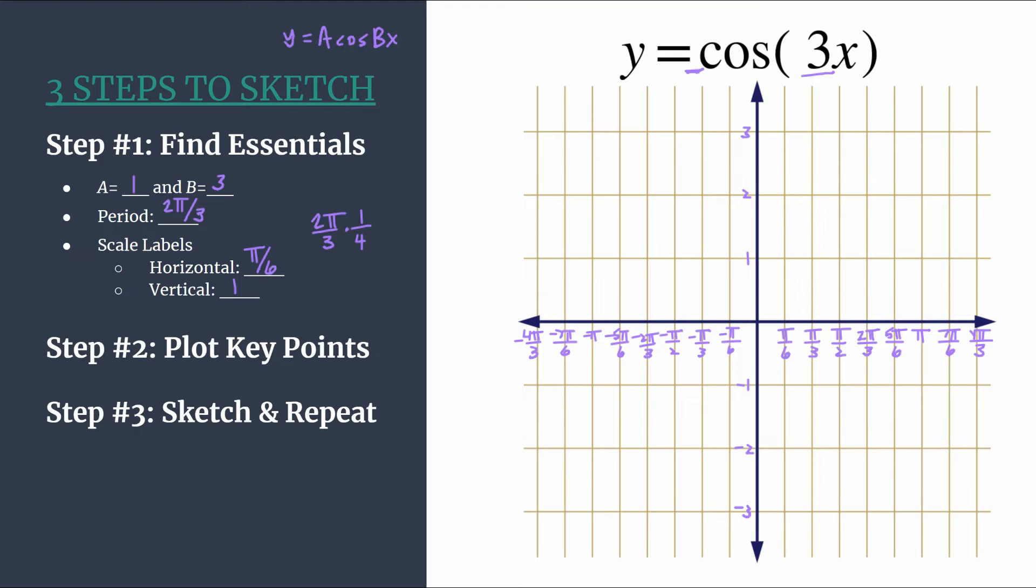Step 2: we're going to plot key points. So we need to know our pattern, and our pattern for an unreflected cosine is maximum, 0, minimum, 0. We see we don't have a reflected graph because we don't have a negative out front, so we know we'll follow that original pattern again: max, 0, min, 0.